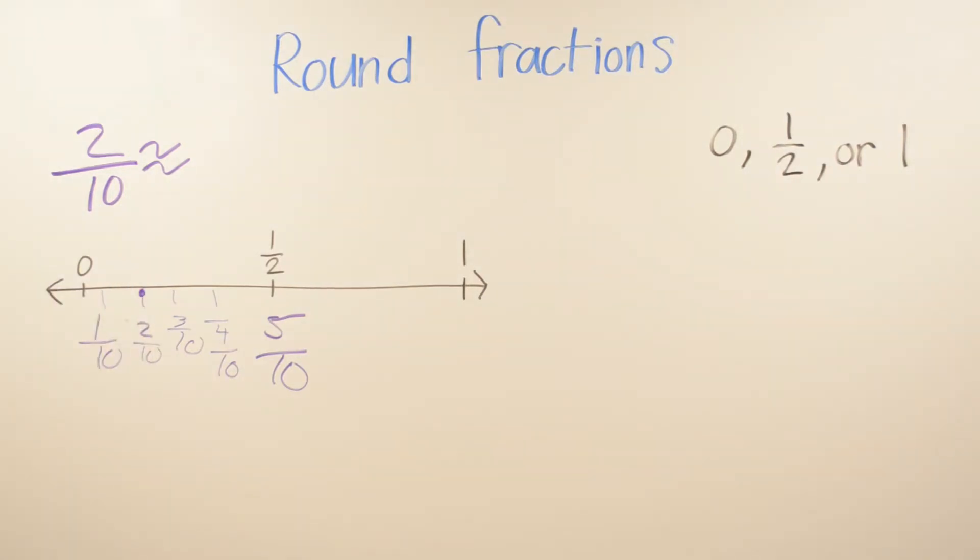But when you have to stop there, what is it closest to? Are we closer to 0 or are we closer to half? I would say you're closer to 0. So we're going to round 2 tenths to 0. And don't forget, do not put an equal sign to the waves above. So we're rounding this closer to 0 than 1 half.